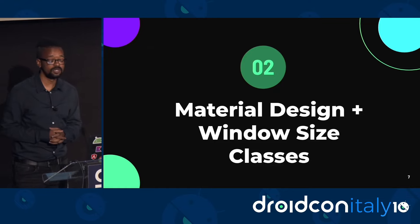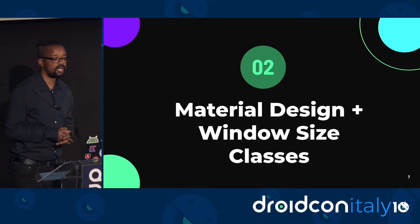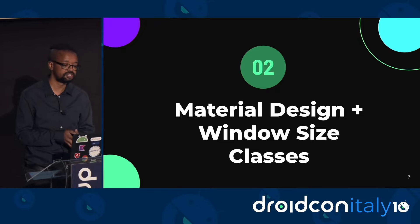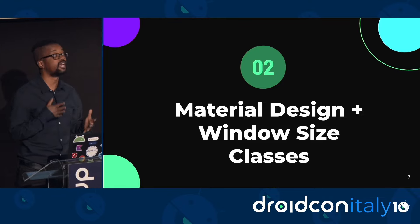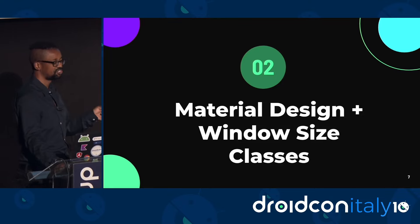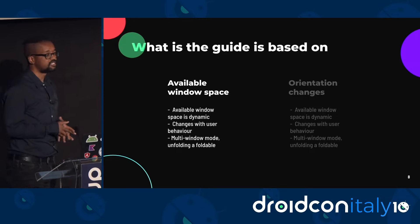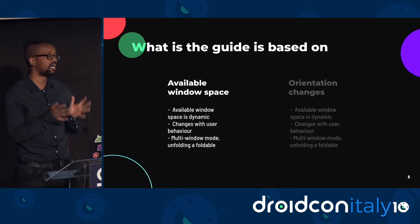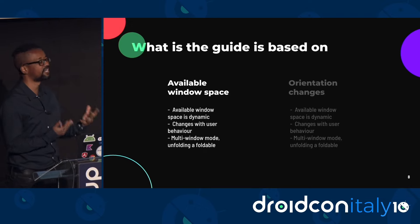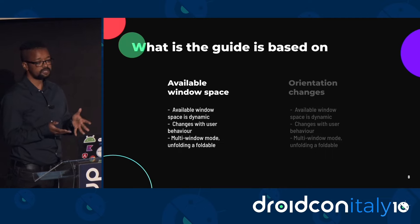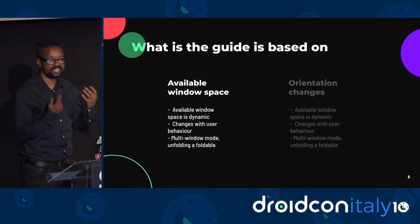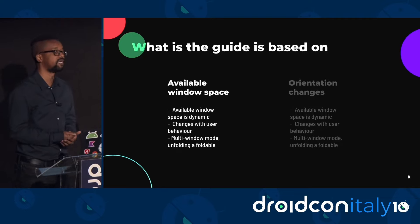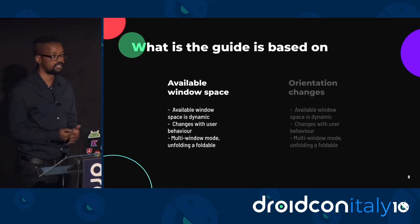For material design and window size classes, there's a dedicated section on the material design website that focuses on window size classes and how these different classes can be leveraged to build adaptive UIs. The opinionated material guidelines are based on guiding principles, the first being available window space. Window space can change at any time and is therefore dynamic. What the user does on the device also impacts the amount of screen space available for your app at any particular point in time.